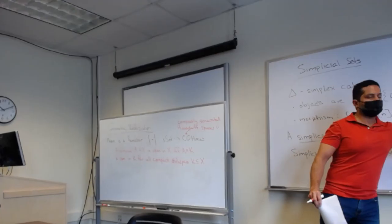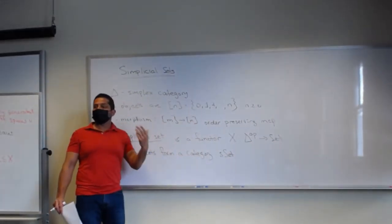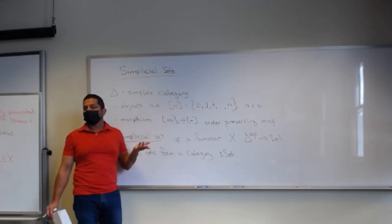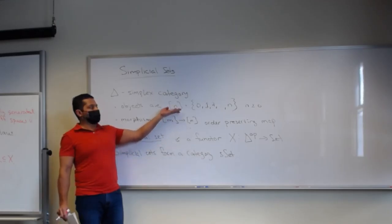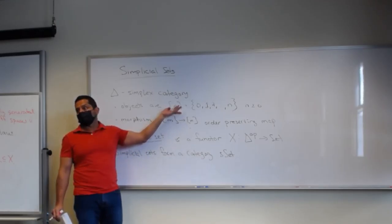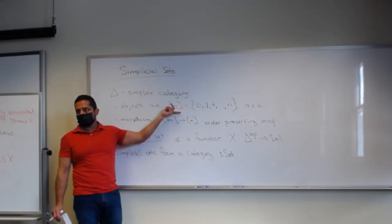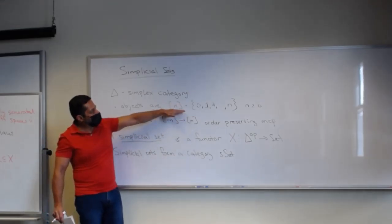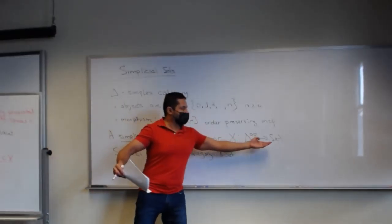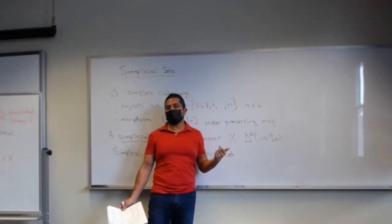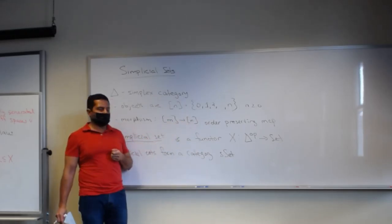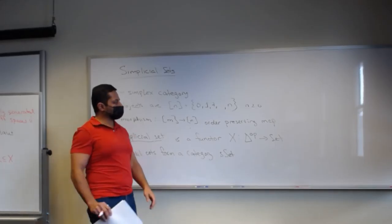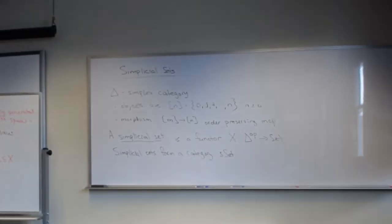The idea is you think of each one of these functors — you take a simplex, say n, and it's returning a set. So if the set has three elements, what you're going to do is generate three standard n-dimensional simplices — the linear convex combination with n+1 basis vectors in R^(n+1). So the standard way of turning this into an n-simplex: if X of n is a set with three elements, you construct three standard n-simplices, and then the morphisms tell you how to glue them all together.